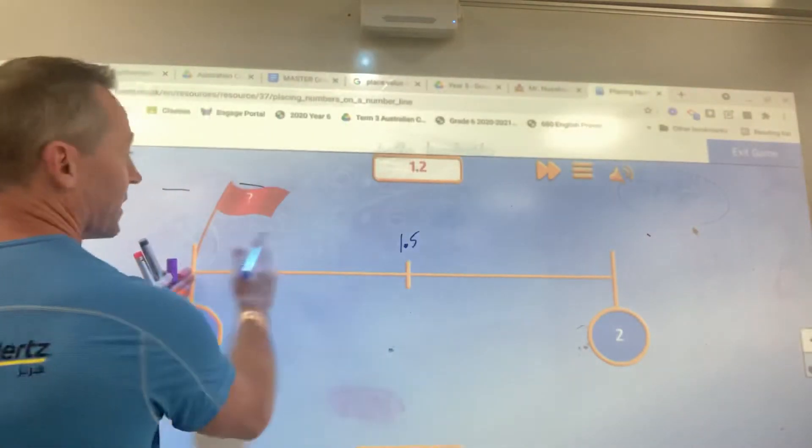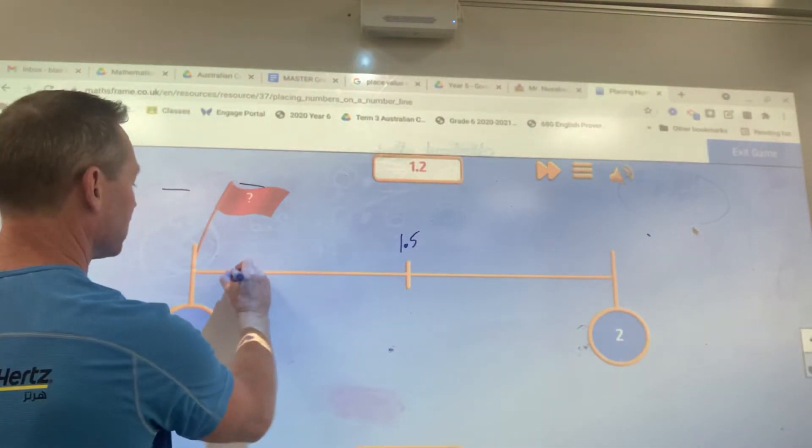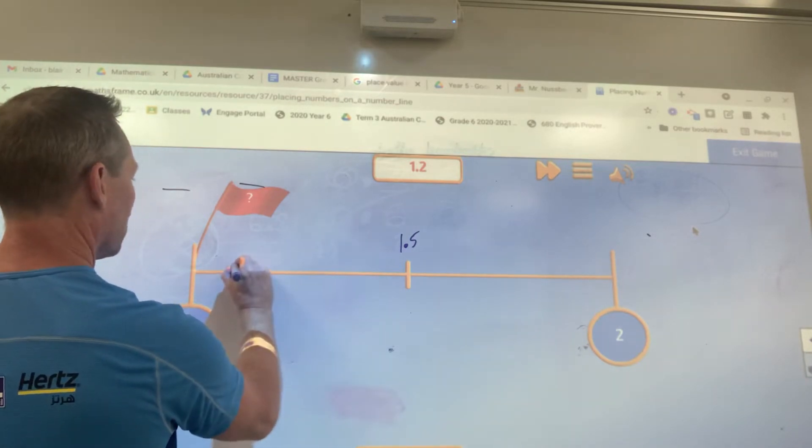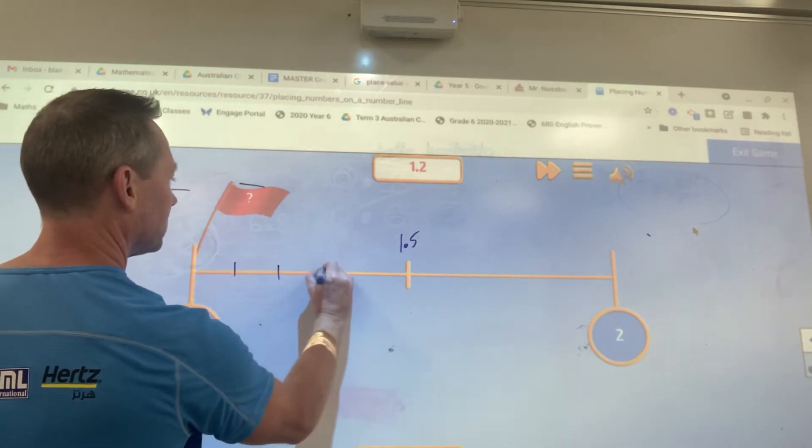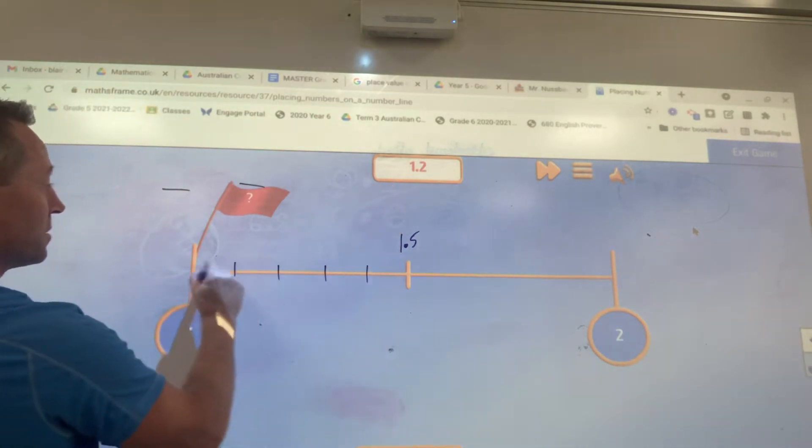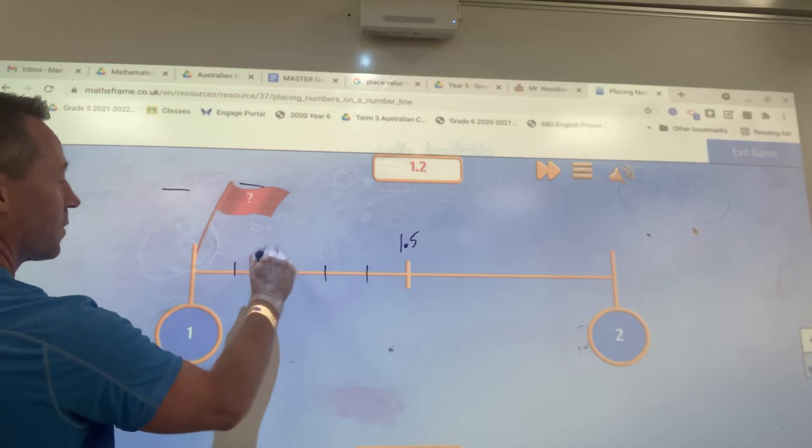I guess from here to there, I just need to evenly make it into 5 bits. Maybe 1, 2, 3, 4. Roughly, so I would say 1.2 here. 1.2.